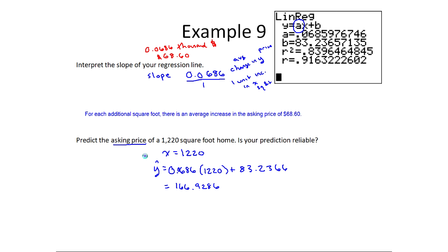Of course, that's not my final answer because it asks for an asking price, and so this doesn't make sense. But remember, it's in thousands, so this would actually mean an asking price of move this decimal over three places or multiply by 1,000, $166,928.60. The second part of the question is, is this reliable?